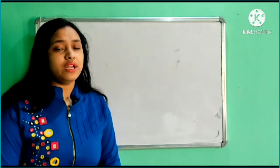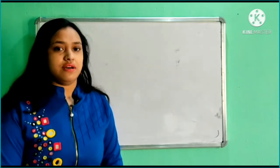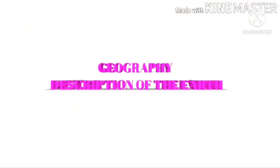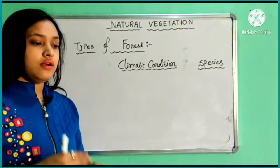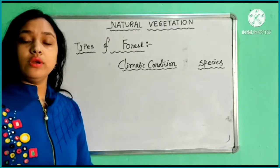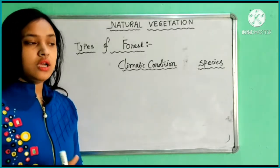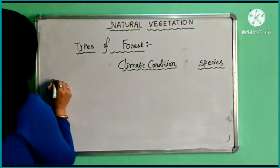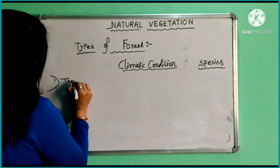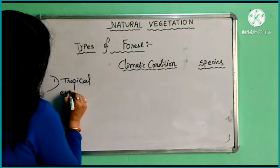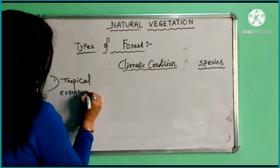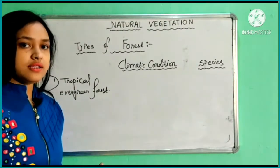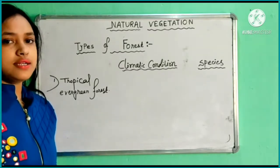Today our topic of discussion is natural vegetation, found in the Class 11 syllabus, Chapter 5. We will talk about different types of forests found in India. Let's start our discussion. First, we talk about tropical evergreen forest.